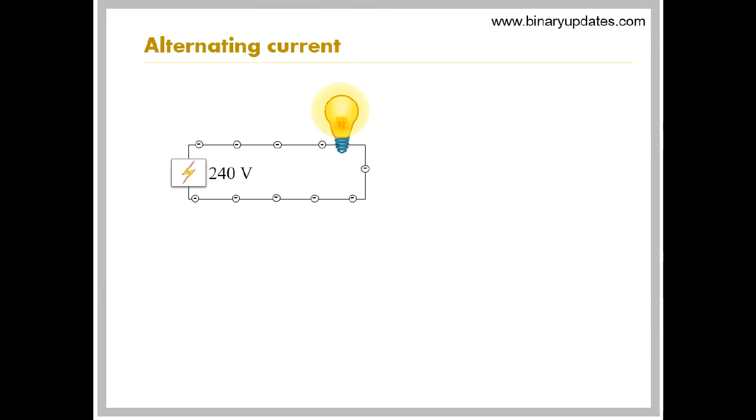We learned that AC is bidirectional and it alternates back and forth. Let's see what this exactly means.